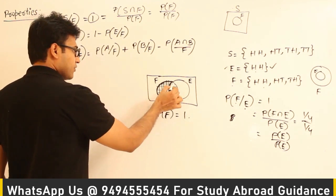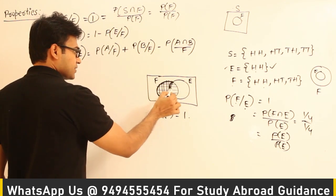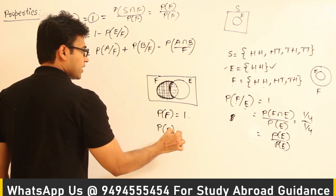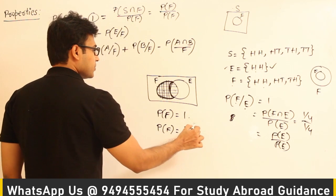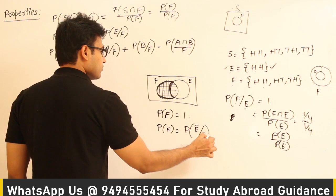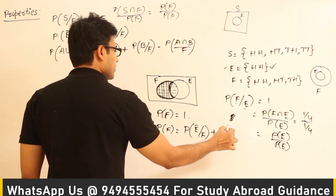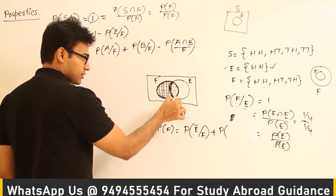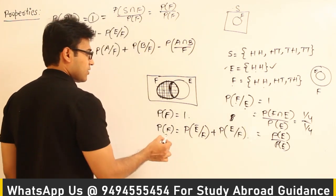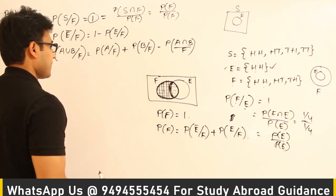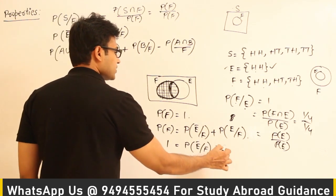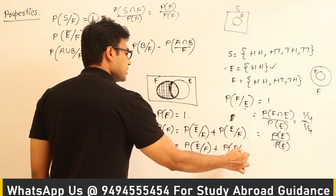We can write P of F as the sum of two parts: one part is P of E complement given F, and the other part is P of E given F. Therefore, 1 equals P of E complement given F plus P of E given F, from which we can derive the complement formula.